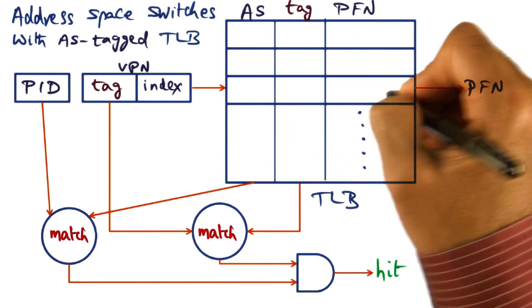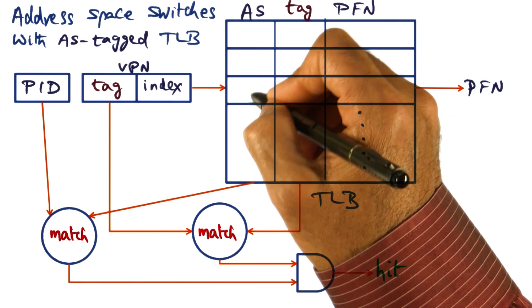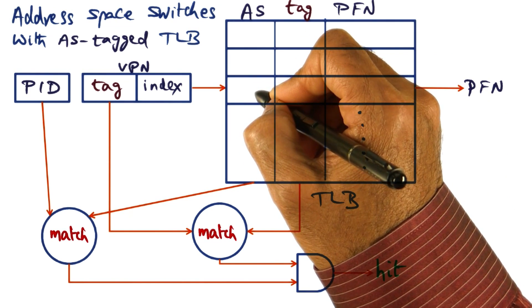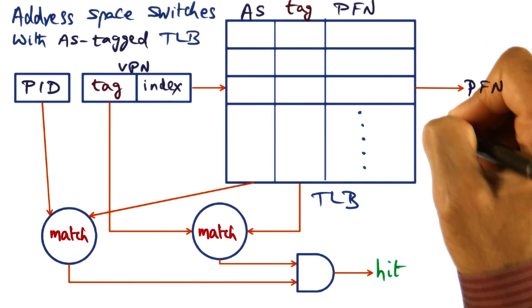In other words, every entry in the TLB is flagged with the process ID that the entry corresponds to.